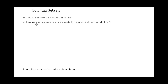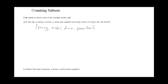So here's the set. The set would be made up of a penny, a nickel, a dime, and a quarter. So she has four objects in her hand — these sums of money.